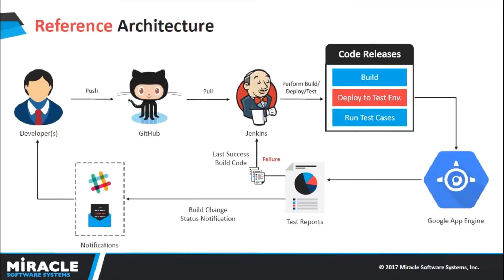In short, the developer pushes changes to GitHub, where GitHub then notifies the Jenkins server about the changes with the help of GitHub webhooks. Once the Jenkins server receives notifications about the changes, it will automatically start the build and deploy the application onto Google App Engine and perform all the required test cases. If the test case fails, Jenkins will automatically roll back the changes by deploying the last successful build code onto Google App Engine and send notifications to the developers with the help of Slack and email.